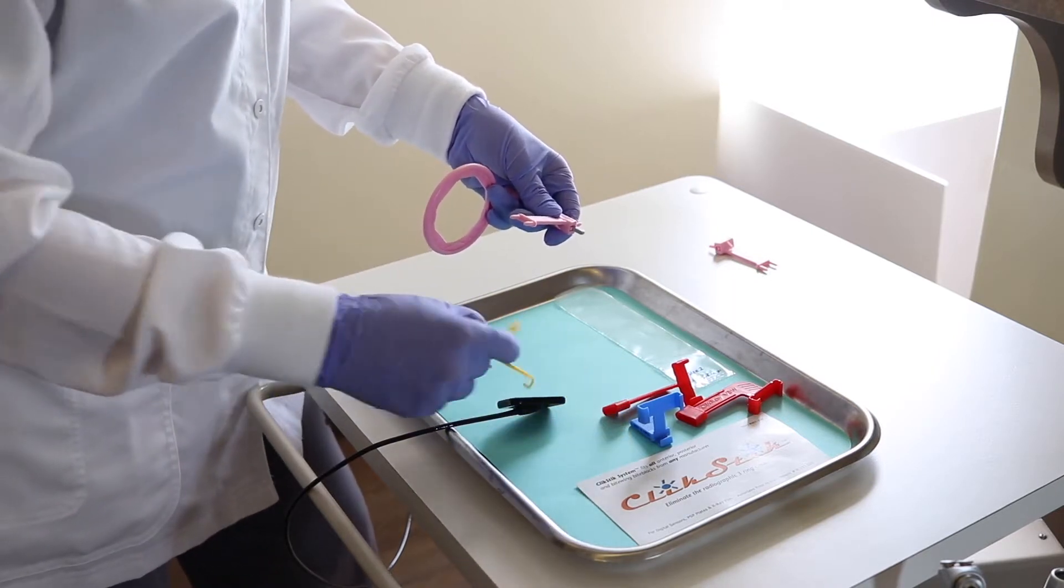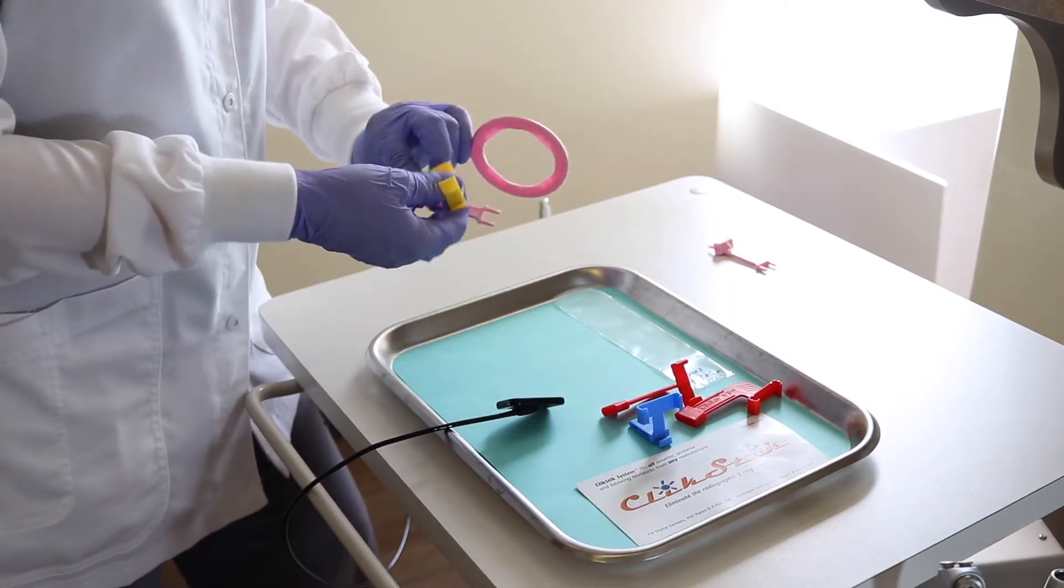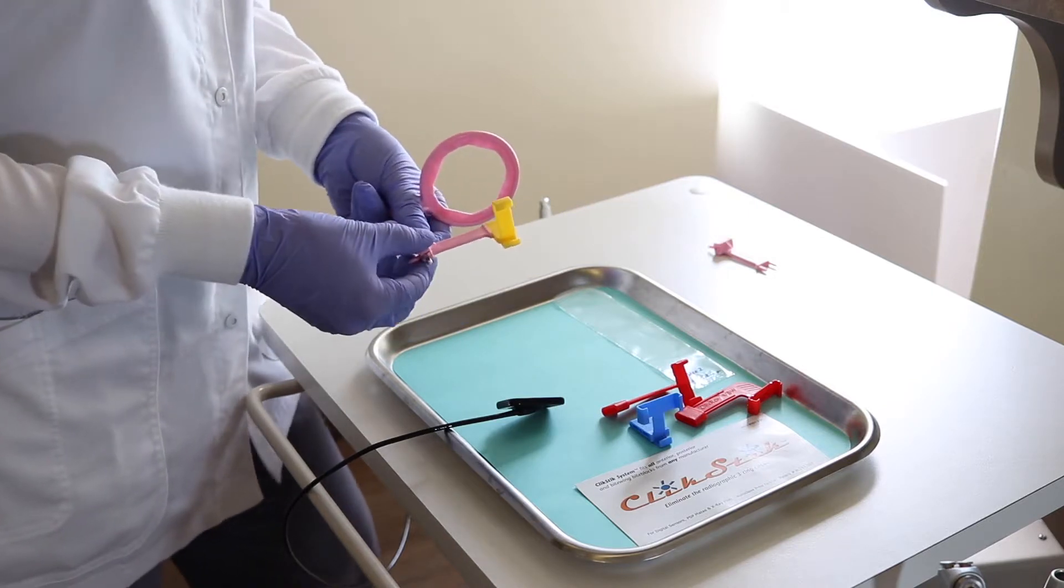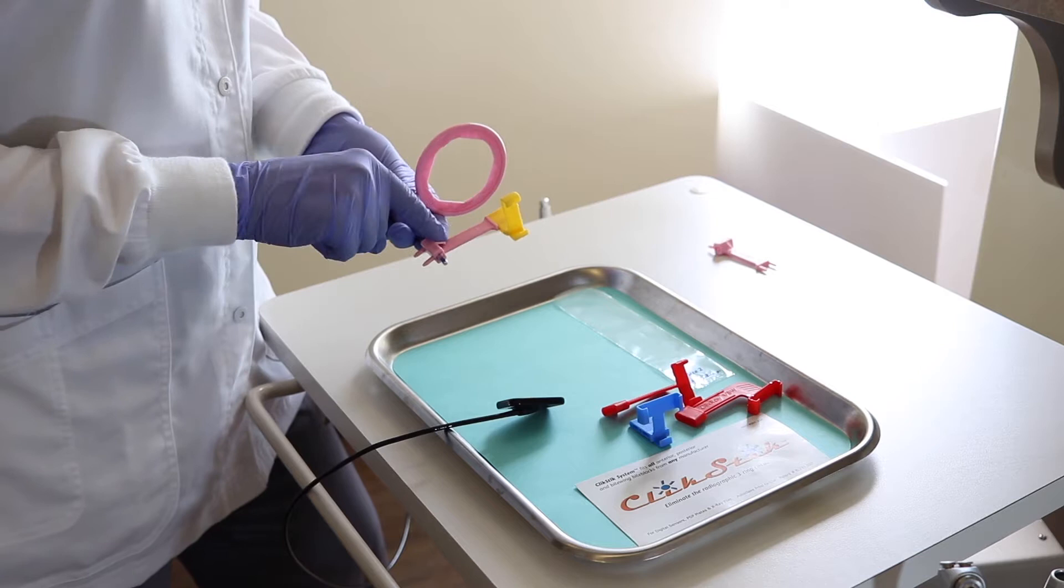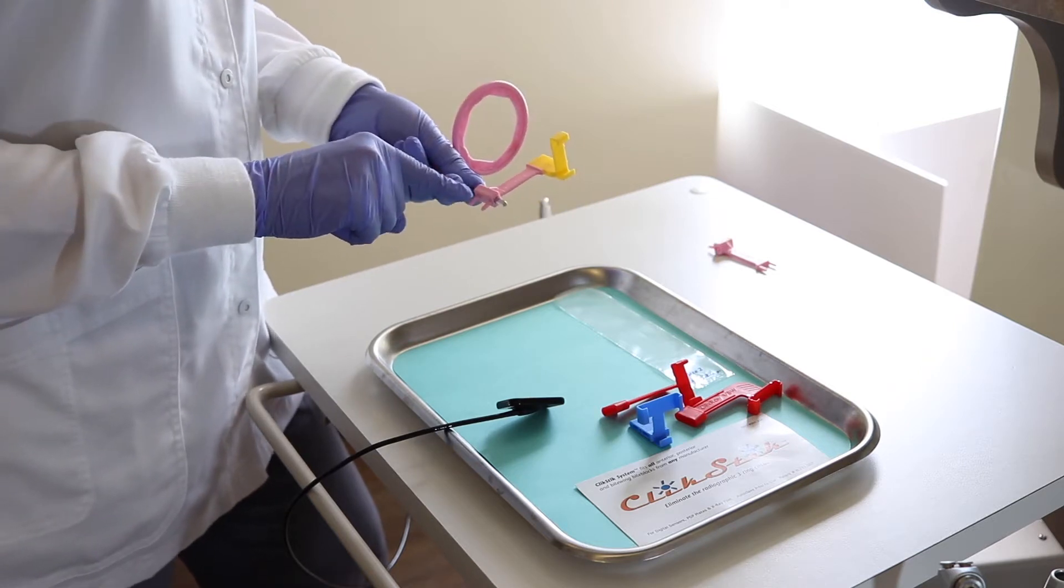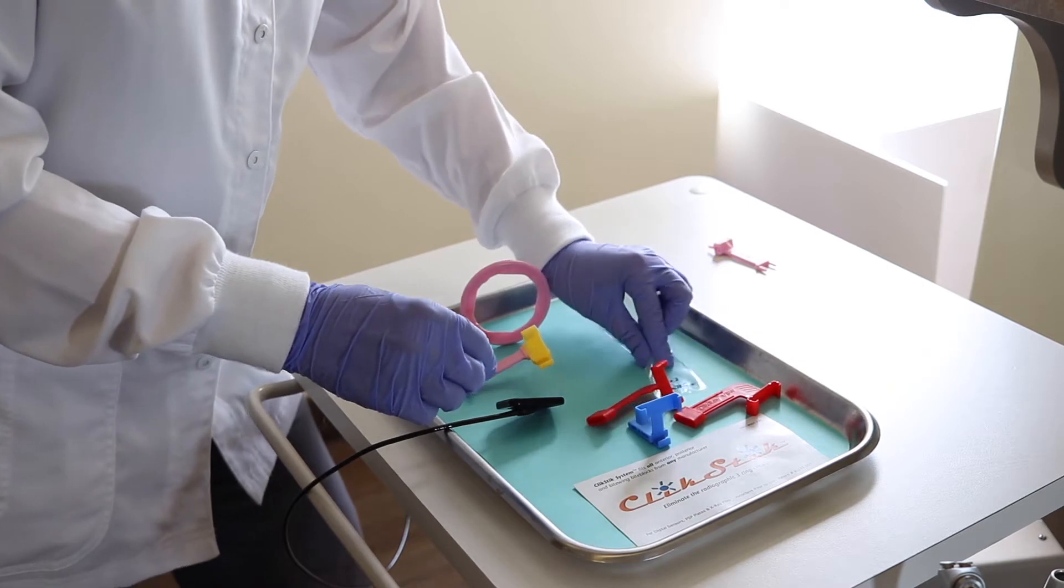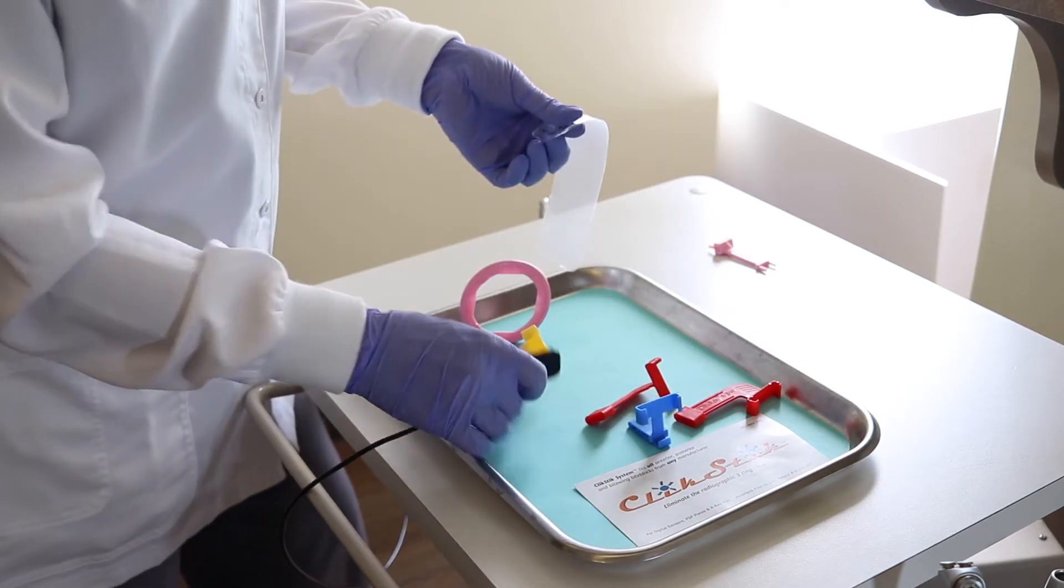So how you go ahead and set this up is by just placing your posteriors and your anteriors onto the long edge of the stick and when we flip it over I'll show you how to use the other side of this to use your horizontal and vertical bite wings.